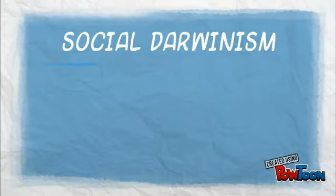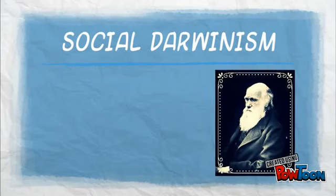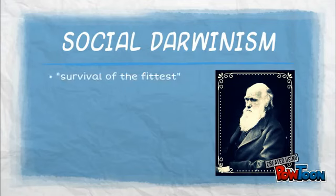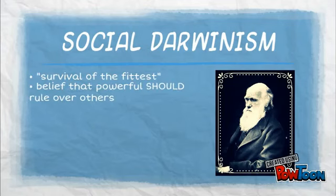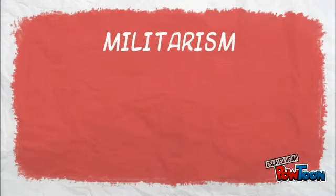Next we have Social Darwinism. Charles Darwin proposed a theory of evolution that said there's survival of the fittest species. A lot of Europeans believed that because they had superior technology and success in industry, they were the fittest societies and therefore should rule over others.